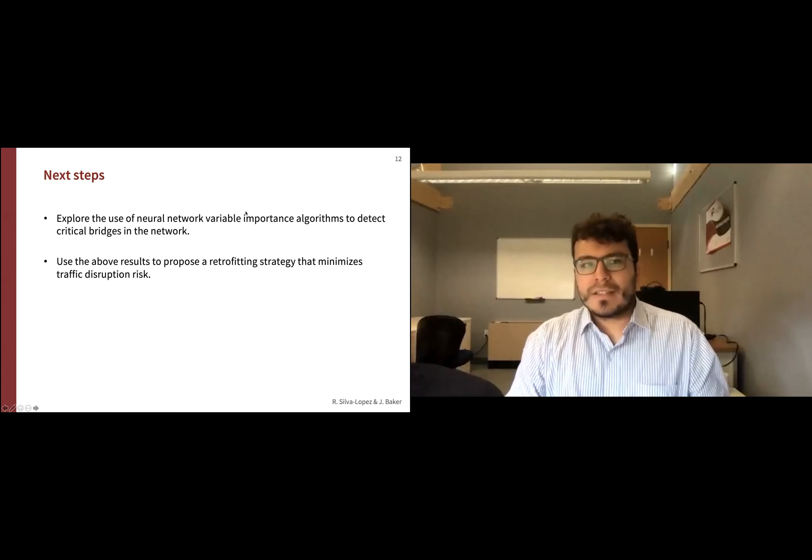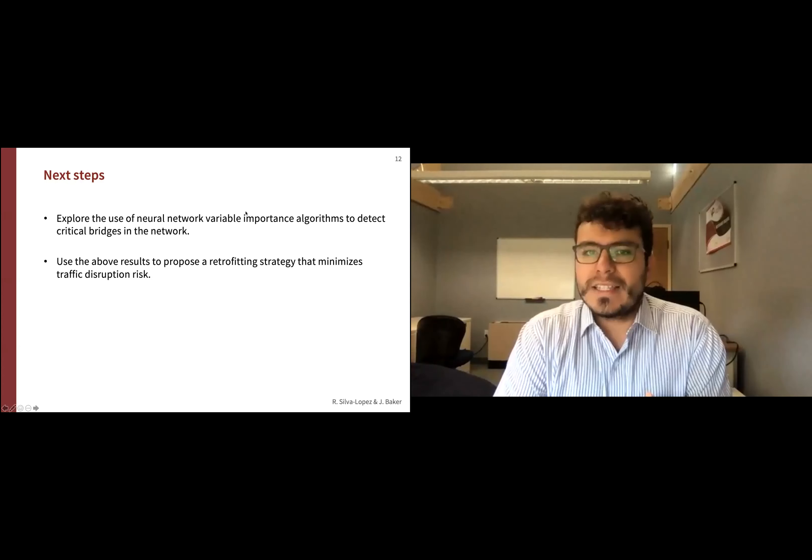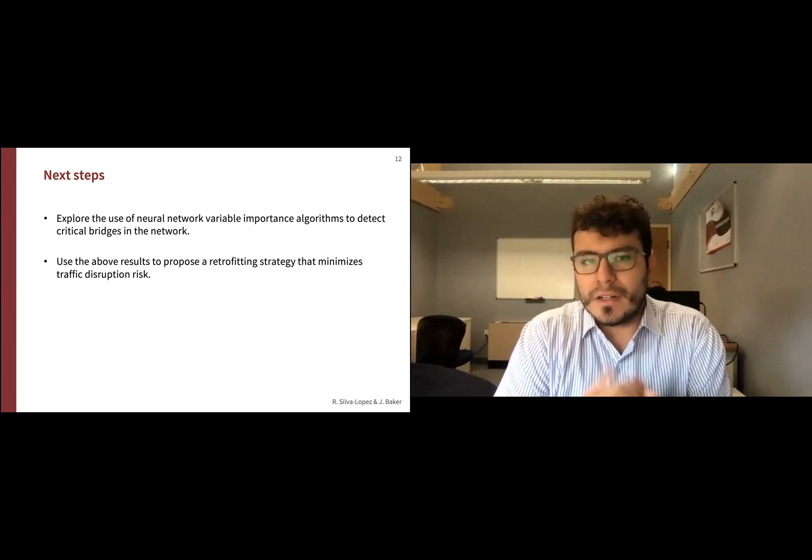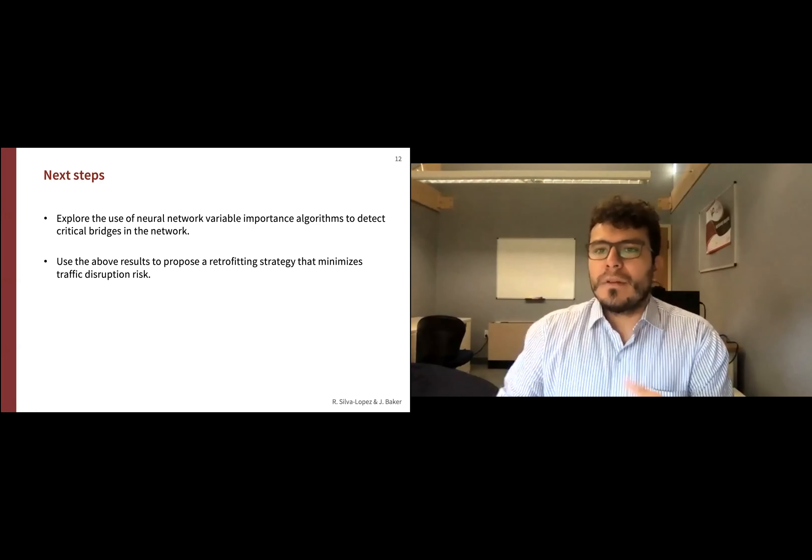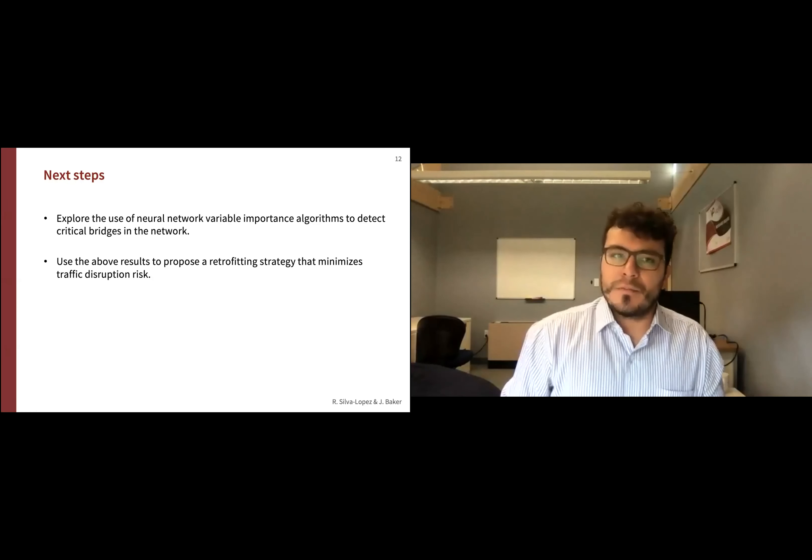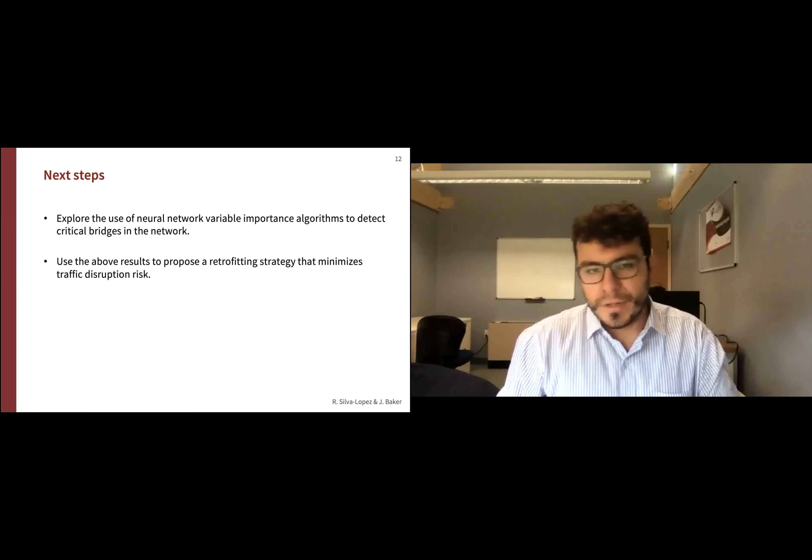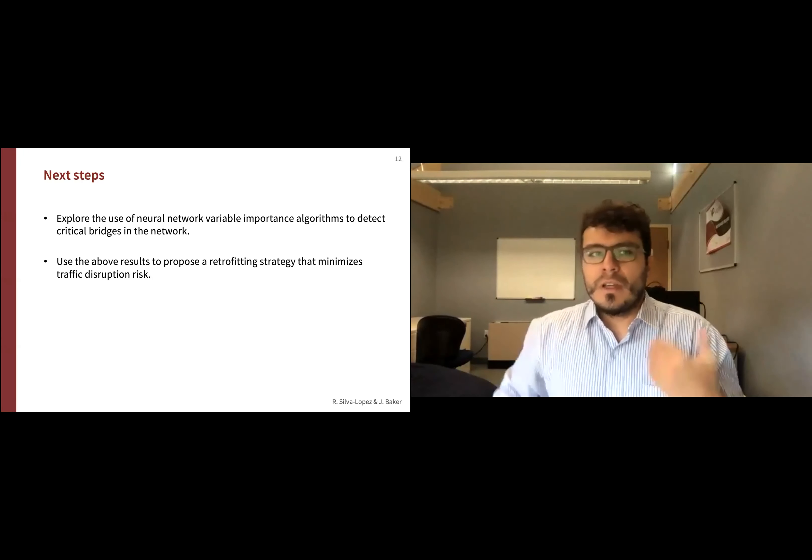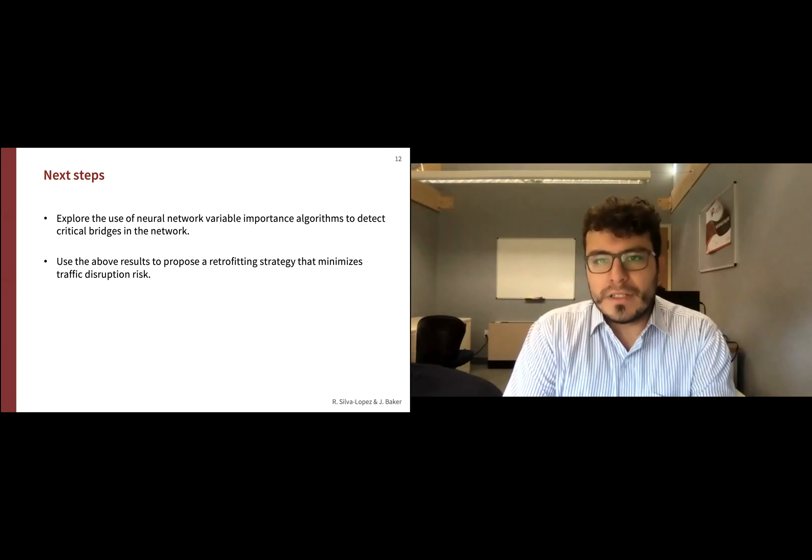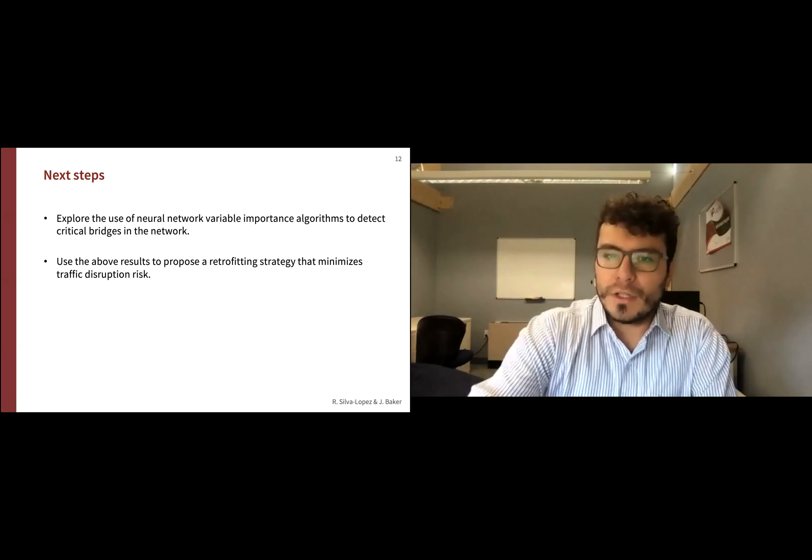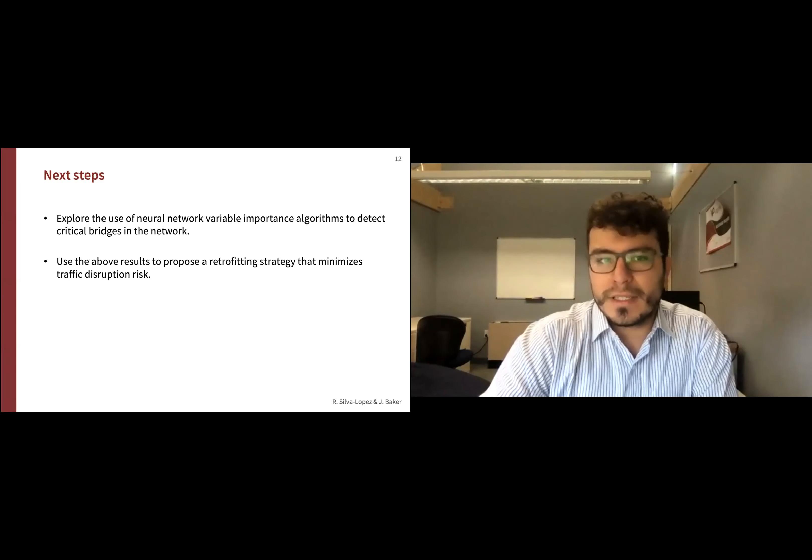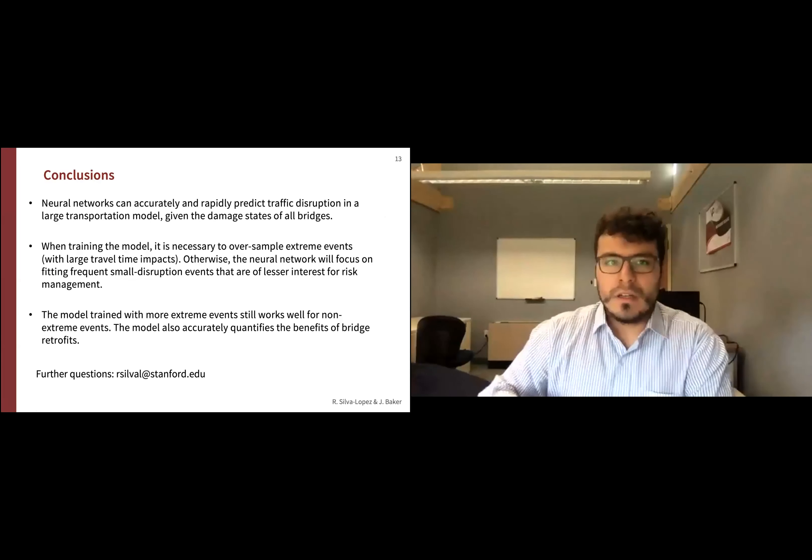When it comes to next steps, given that we trained this neural network that has as inputs the status of the bridges, we want to use variable importance algorithms to detect what bridges are critical to predict traffic performance metrics. Secondly, using that variable importance algorithm, we want to explore how to propose a better retrofitting strategy that minimizes traffic disruption risk.